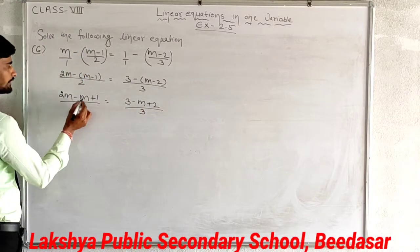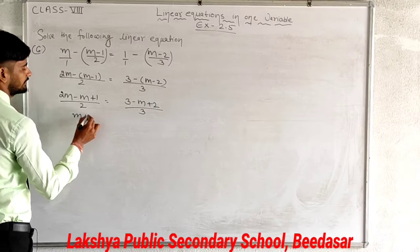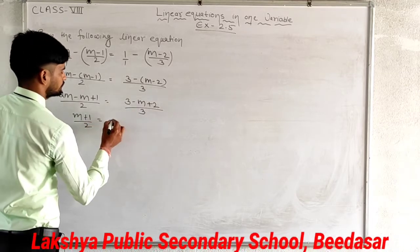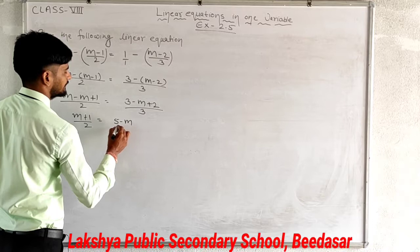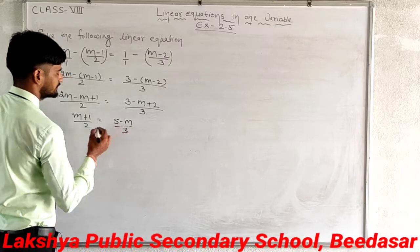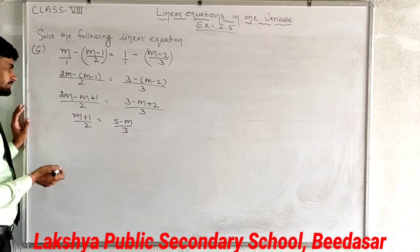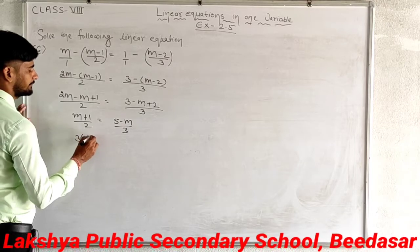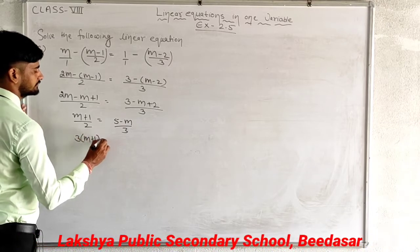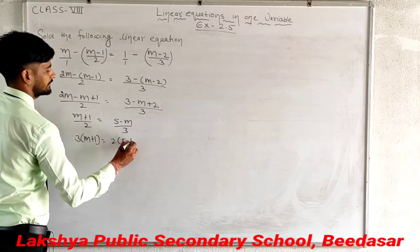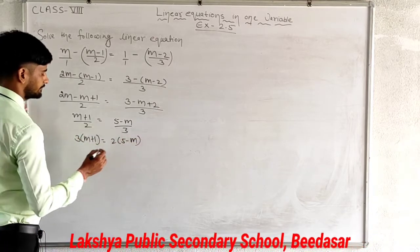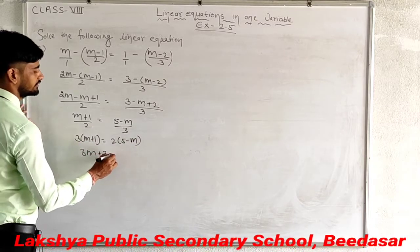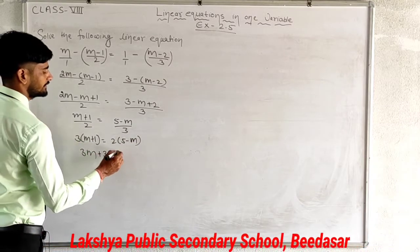Simplifying: 2m minus (m minus 1) gives m plus 1, upon 2. On the right: 3 plus 2 gives 5 minus m, upon 3. Now cross multiply: 3 multiply (m plus 1) and 2 multiply (5 minus m). This gives 3m plus 3, and 2 into 5 gives 10 minus 2m.